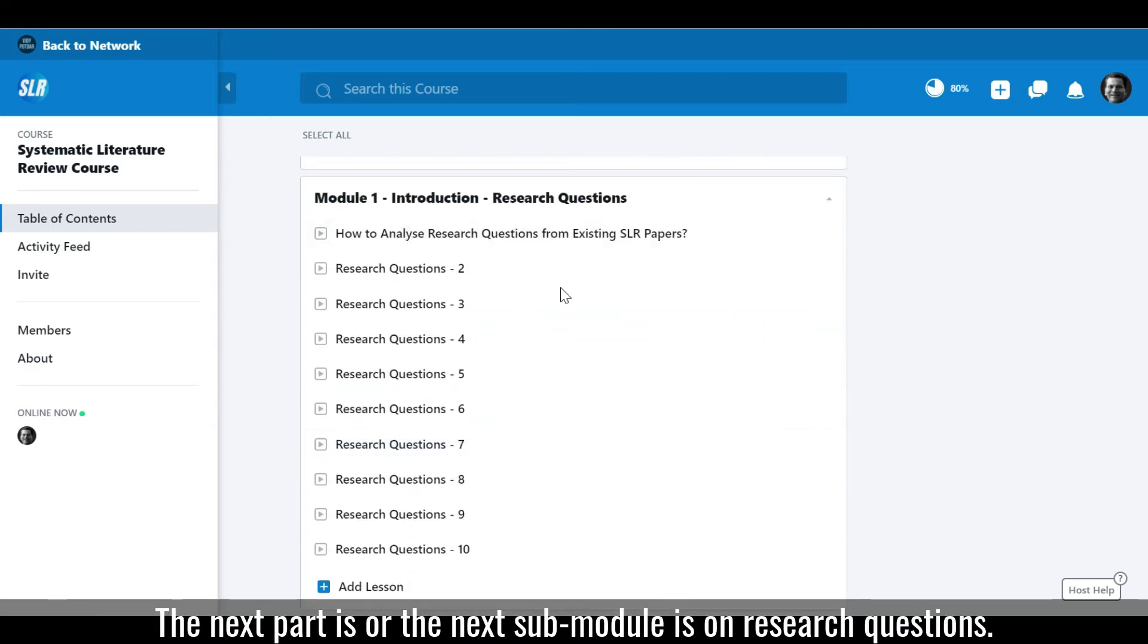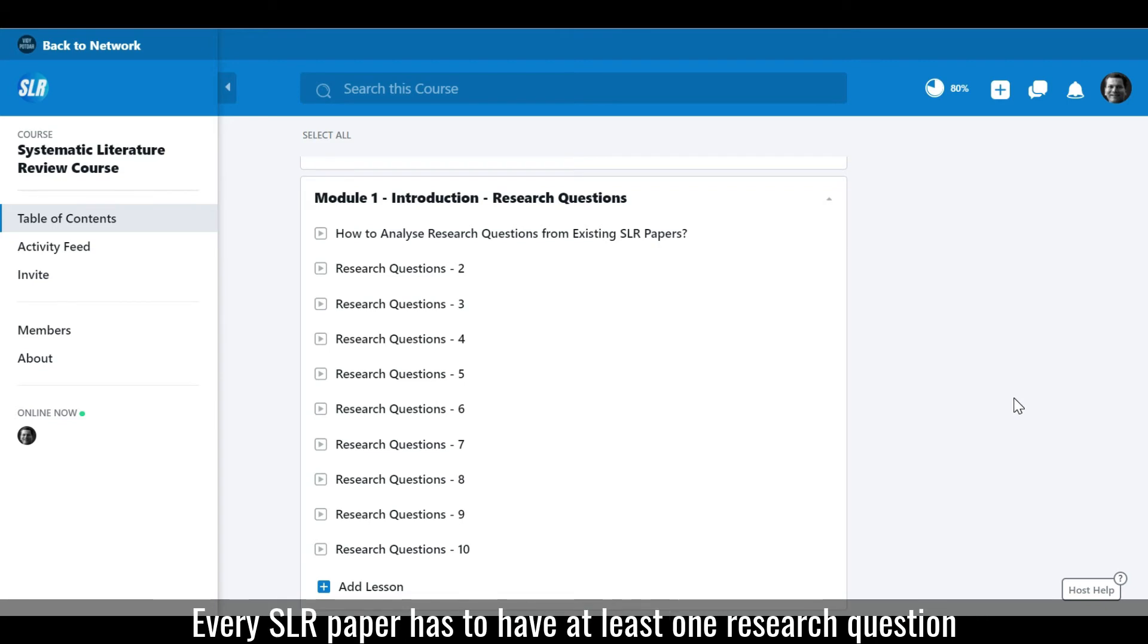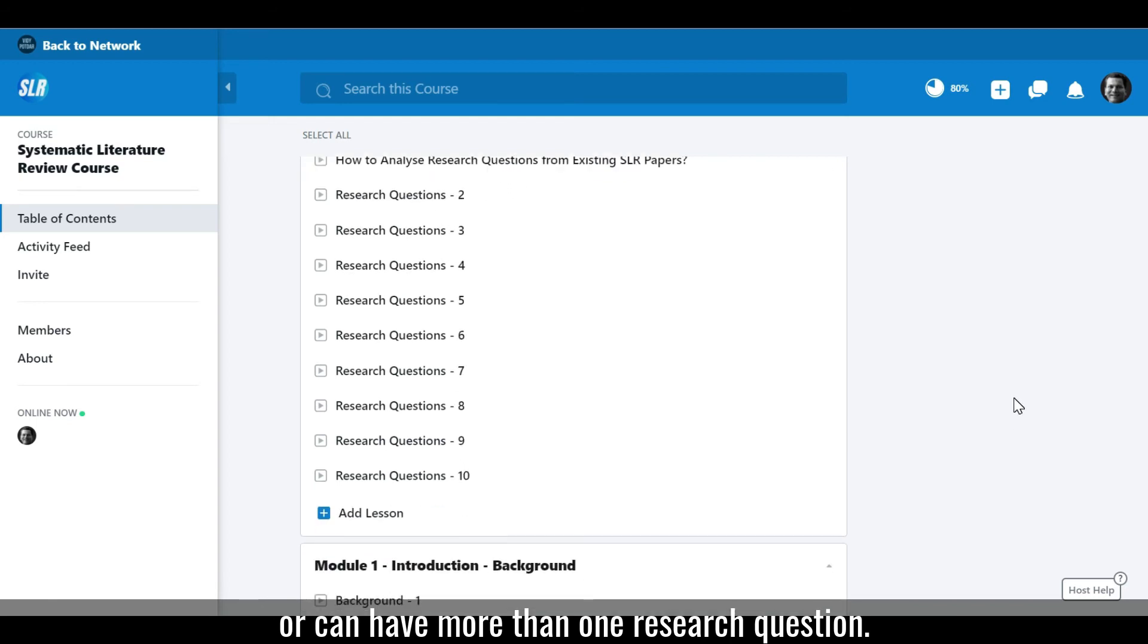The next sub-module is on research questions. Every SLR paper has to have at least one research question or can have more than one research question. But at least one question is compulsory.